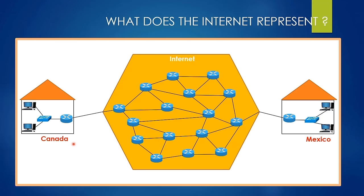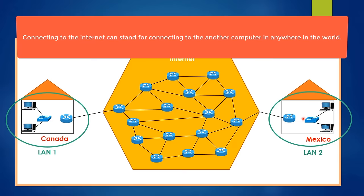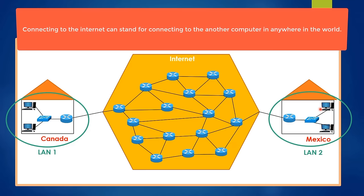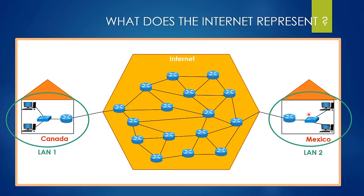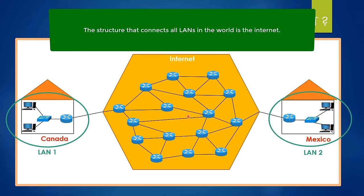Therefore, we can draw the following conclusion: connecting to the internet actually means connecting to another computer located anywhere in the world. You can think of the internet as the structure that connects all the LANs all over the world. There are millions of LANs connected to the internet.